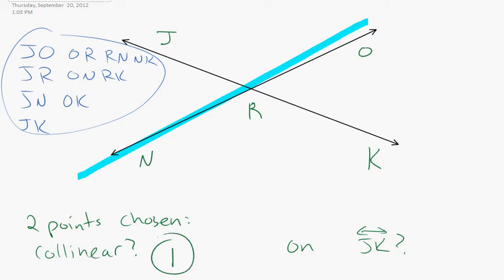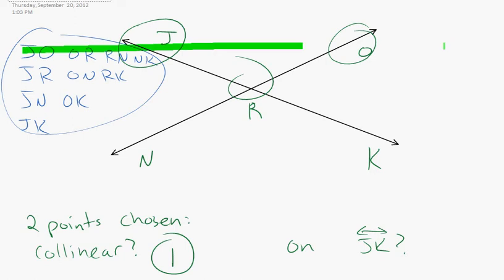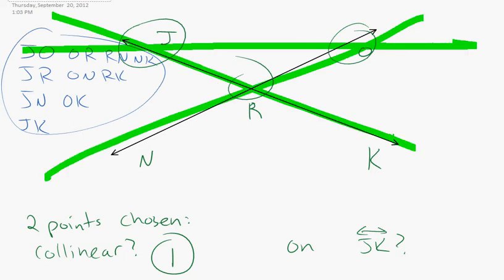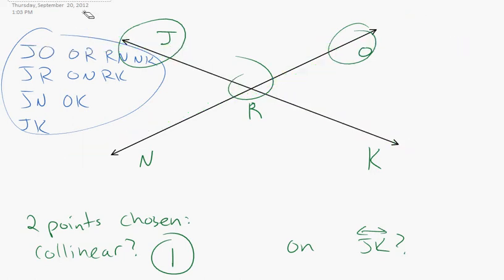One over one. Ten over ten. Any two points are collinear because you can draw a line between any two points. The challenge comes in when you have three points. You can't draw a line through any three points. For example, O, R, and J, you can't draw one line that connects all three of them. So those are not collinear.